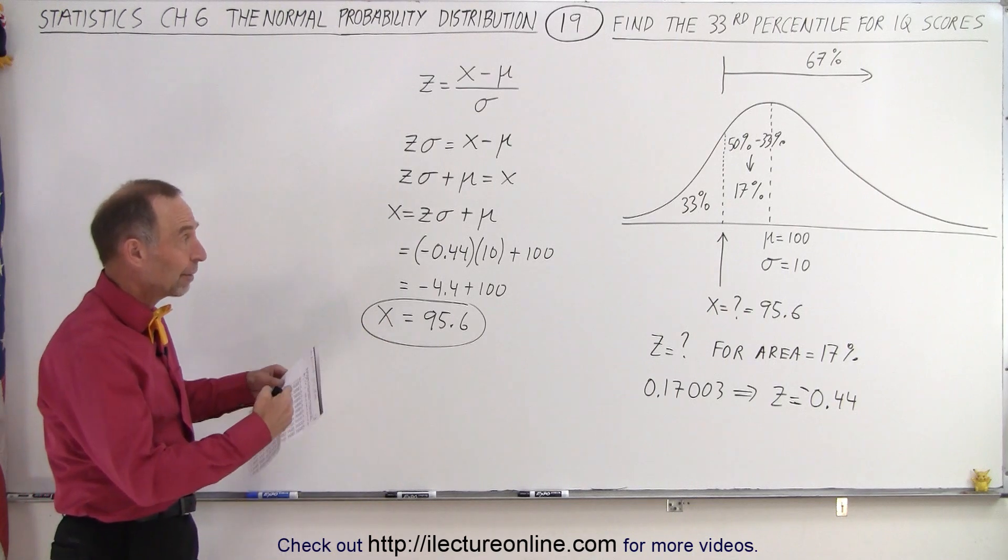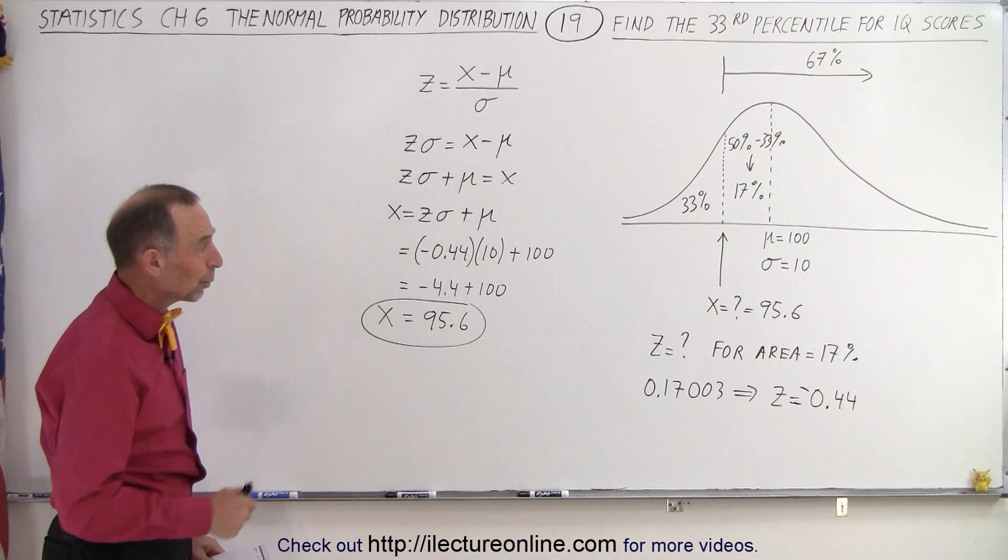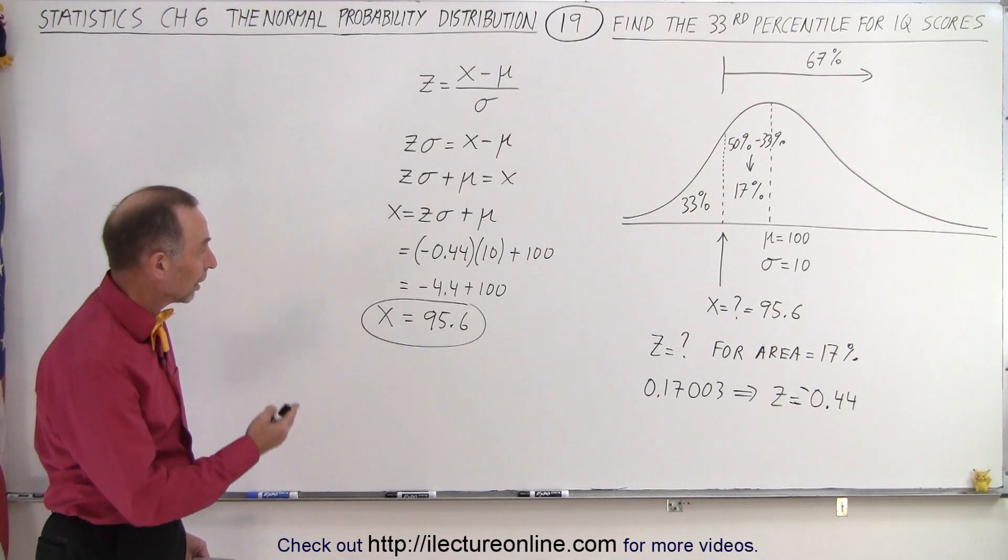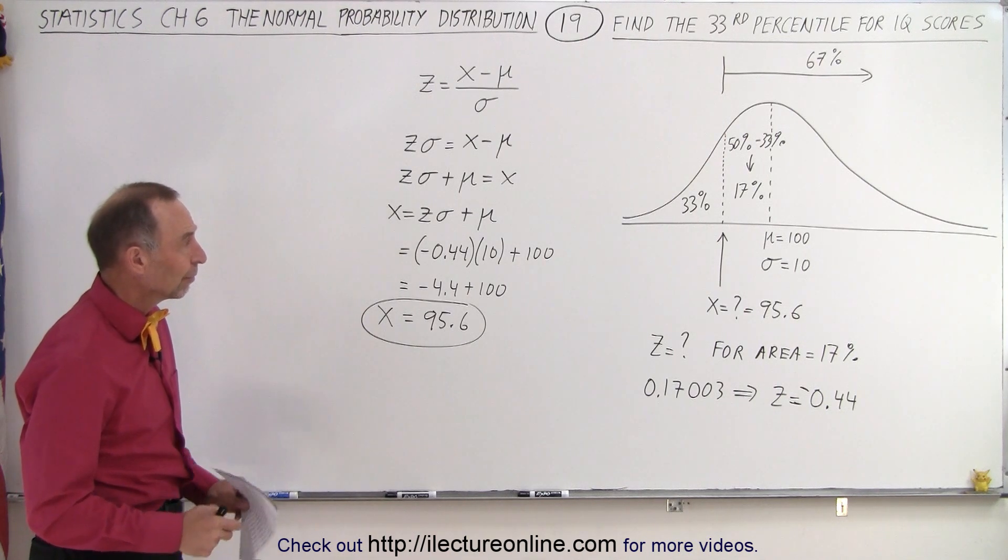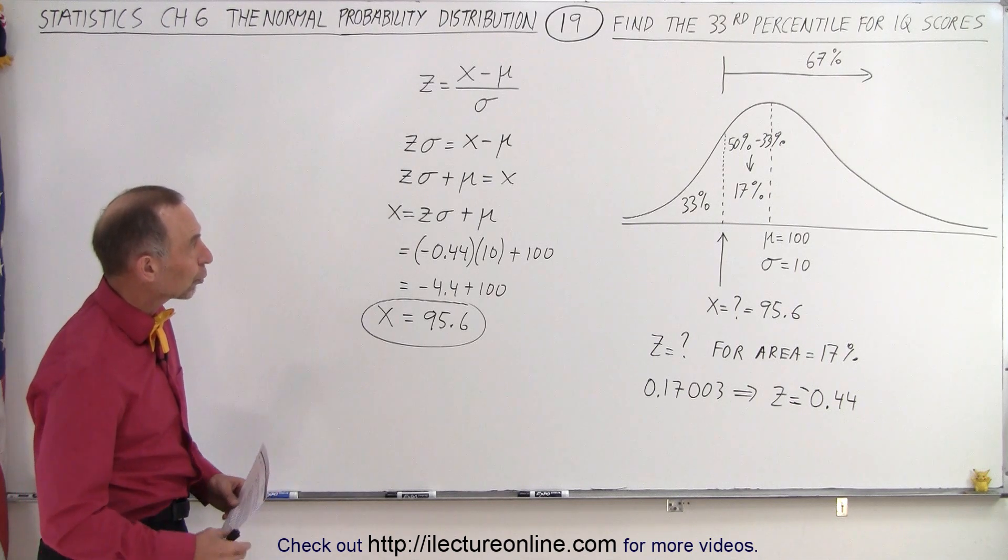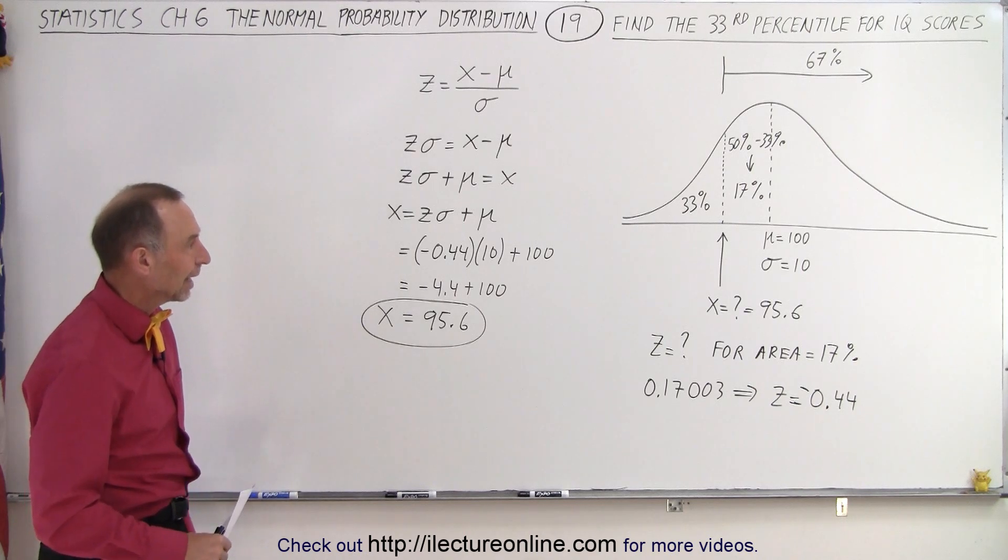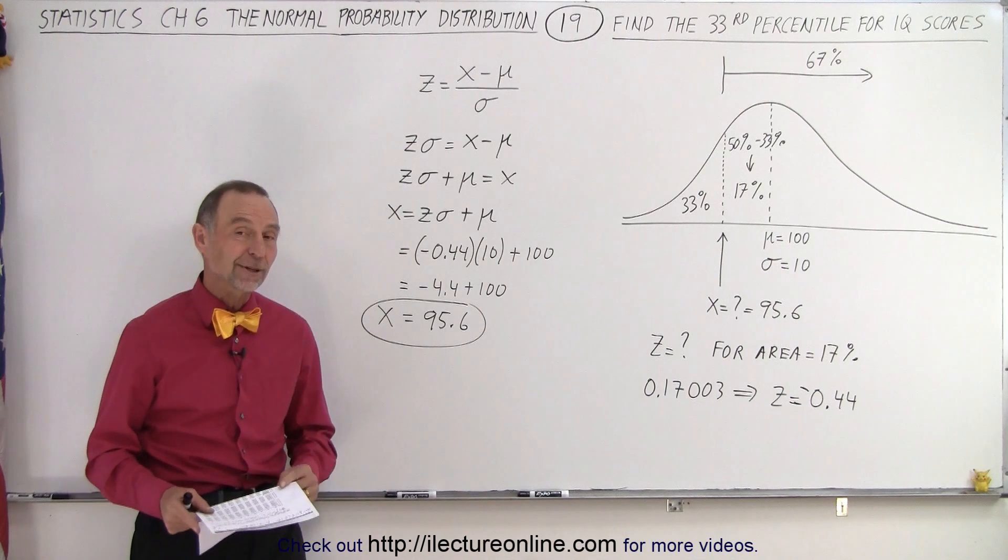And so again, notice there's some very practical applications to the normal distribution curve, and when we're dealing with the Z-score, it makes it easier to find particular interesting elements of that curve or that normal distribution, such as the percentile of any value for any sort of IQ score. And that is how it's done.